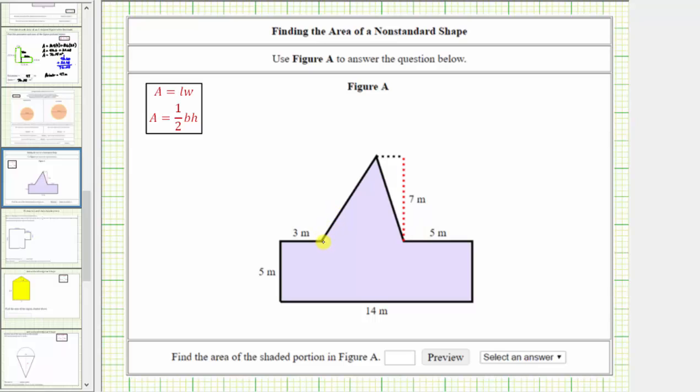Notice how if we cut the polygon here, we now have a rectangle and a triangle. If we find these two areas, the sum will give us the area of the polygon. However, we are not given the length of the base of the triangle, so we need to find the length of this base.